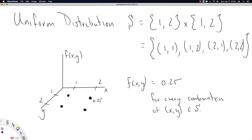So our function f of x, y essentially equals 0.25 for every combination of x, y in S. If you plugged in 1, 1, you'd get out 0.25. If you plugged in 1, 2, you'd get out 0.25. That's what's defining uniformity for us.